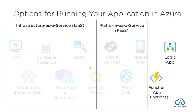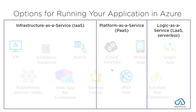The second category is Platform as a Service, or PaaS — Cloud Services, App Services Web Apps, and Mobile Apps, and also partly Service Fabric. You can use Service Fabric in two ways: as PaaS where you just give it something to run without worrying about how, or as a container orchestrator where you have more control but also more responsibilities. The third category I call 'Logic as a Service' — also called serverless — which includes Logic Apps and Azure Functions.